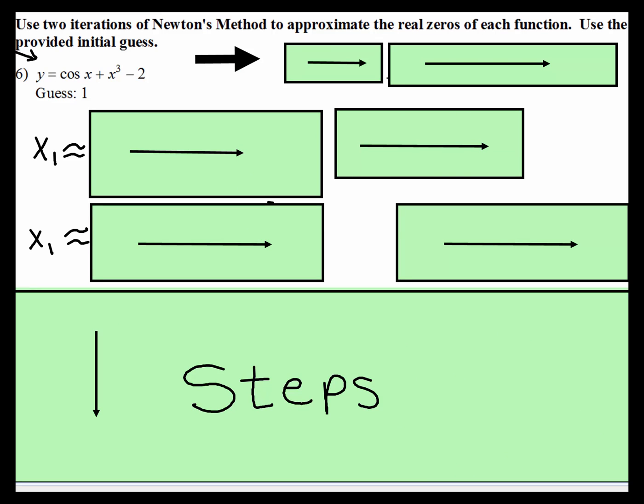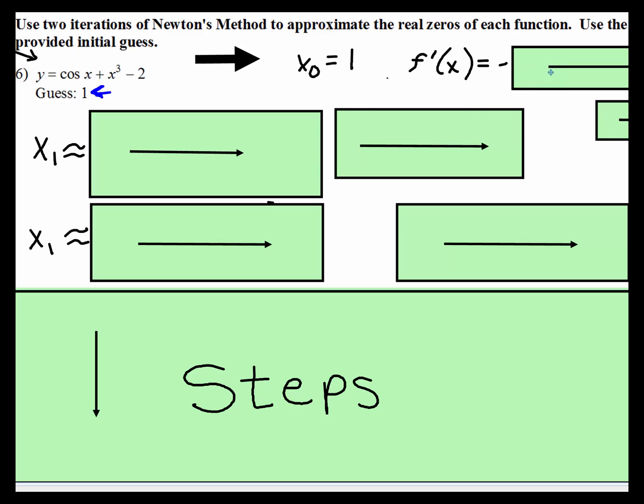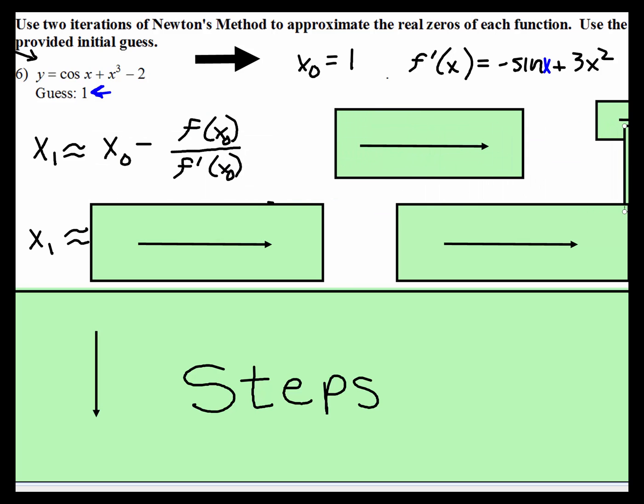Here we're given a function: y is equal to cosine x plus x cubed subtract two, and they're telling you that for the first guess you're going to use the number one. So here's our first guess, x naught is one, and the derivative of that function. The derivative of cosine x is negative sine x plus the derivative of x cubed, which is three x squared. The derivative of negative two, a constant, is zero, so there we have it. Now you're going to plug that information into the equation.